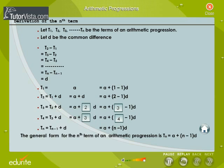The general form for the nth term of an arithmetic progression is tn is equal to a plus n minus 1 into d.